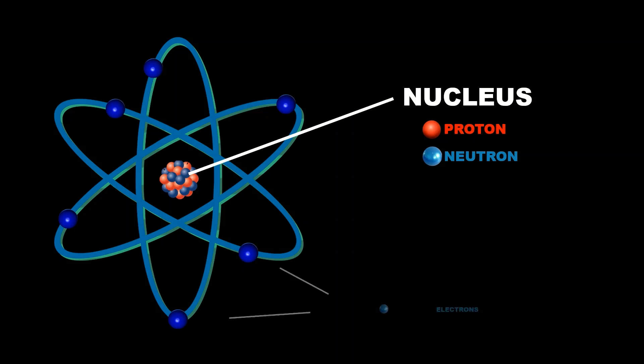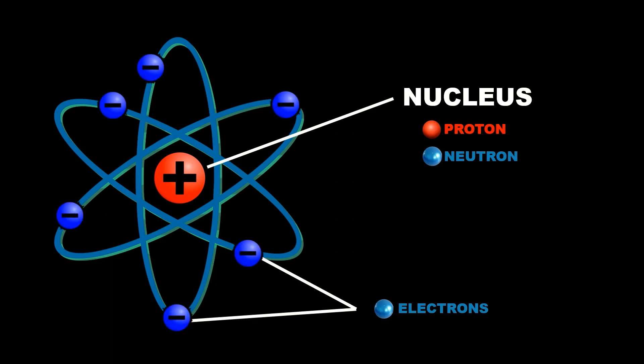The atom is made up of three main subatomic particles. At the center is the nucleus which carries protons and neutrons. Around the nucleus are electrons orbiting in different parts. Protons are positively charged while electrons are negatively charged. The neutron is not charged.